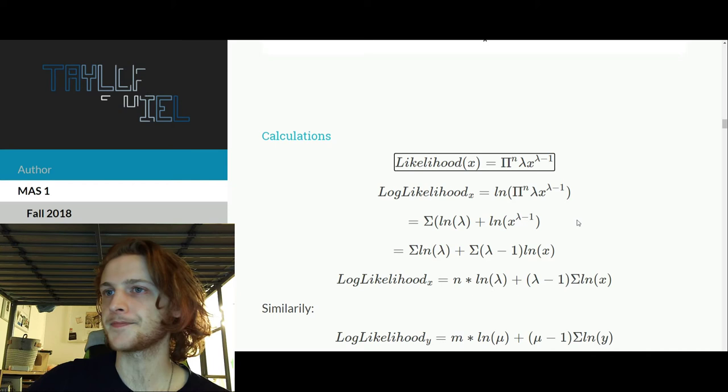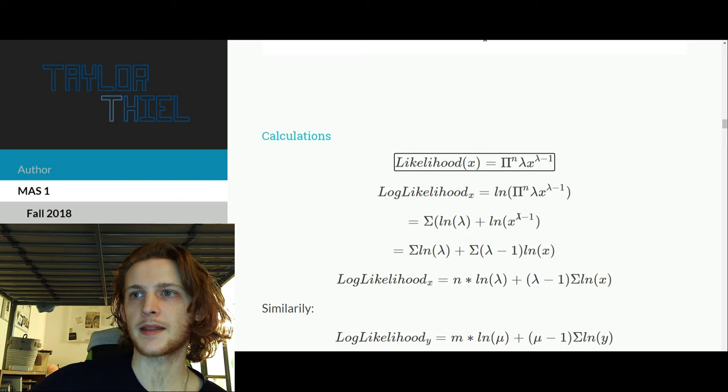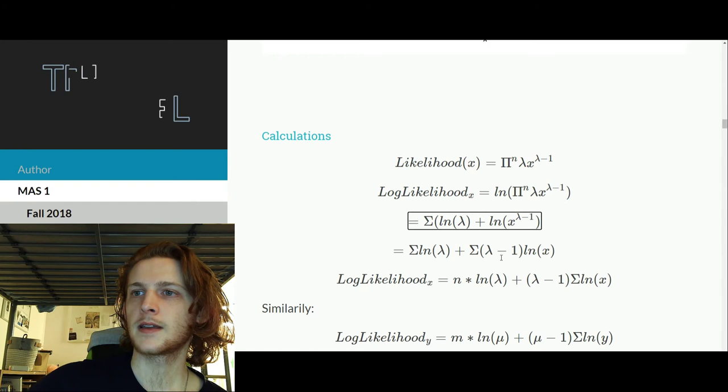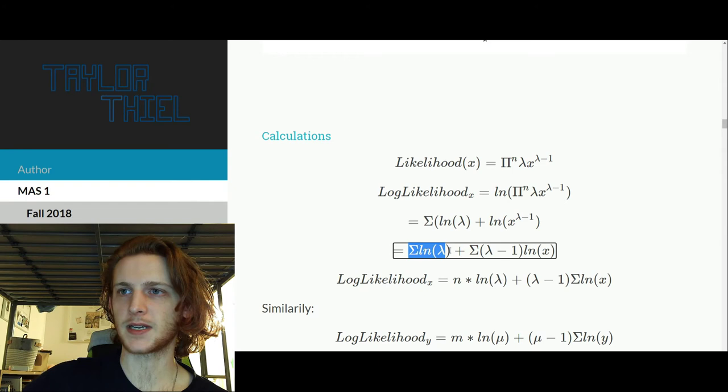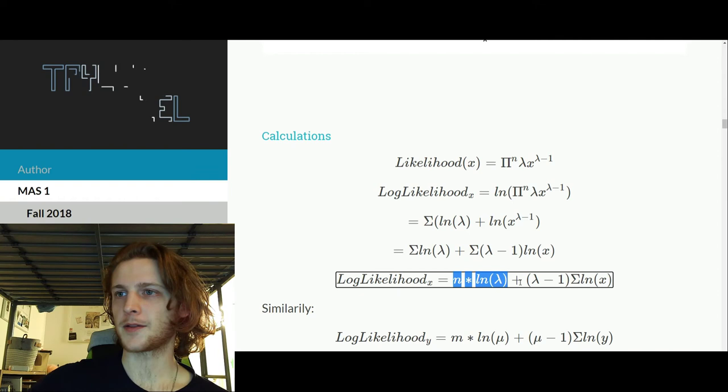Finally, we can break up this summation into its two components, and then bring this exponent, lambda minus 1, down in front of the log. And then finally, when you have the summation of a constant, you can just take that constant and multiply it by the number of iterations within the summation. So that's how we go from this summation here to n times the natural log of lambda. And then on the right, we're able to pull out this constant out in front.